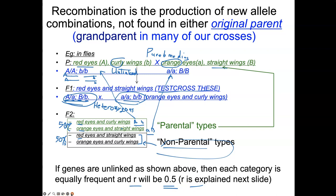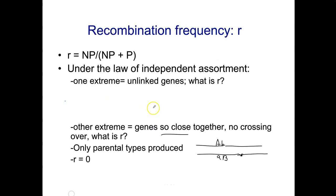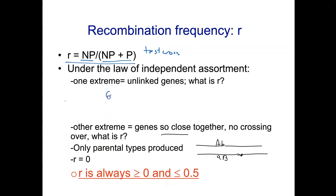Sorry that took a bit long, but I really wanted to make those things clear. When we calculate R value, it's expressed as a decimal — counting up the non-parental types divided by all of the progeny. You have to do it this way with a test cross. If the genes are on separate chromosomes, R is going to be 0.5, as I showed on the previous slide.